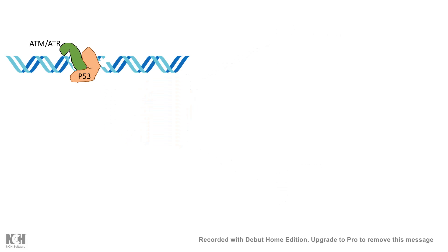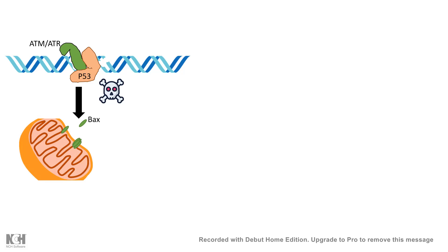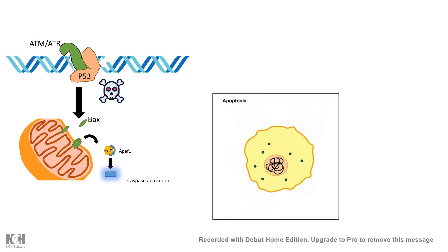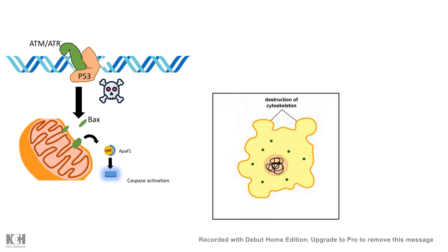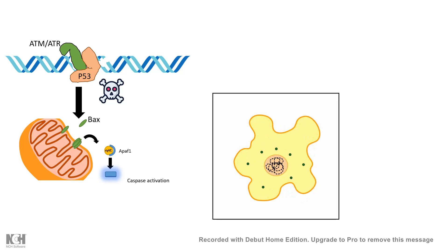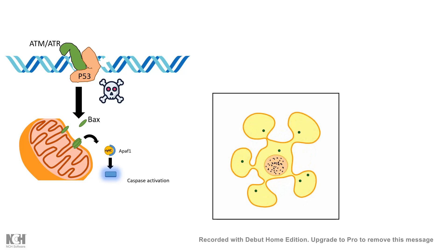Tumor suppressor genes at extreme cases can lead to apoptosis. For example, p53 can coordinate with other tumor suppressor genes such as Bax and allow Bax transcription. When Bax is transcribed and translated, Bax creates small holes on the mitochondrial membrane. As a result, cytochrome c comes out into the cytosol, interacts with Apaf-1 to activate caspase, and thereby brings about apoptosis. So Bax, p53, and all proteins that regulate growth and apoptosis are tumor suppressor genes.